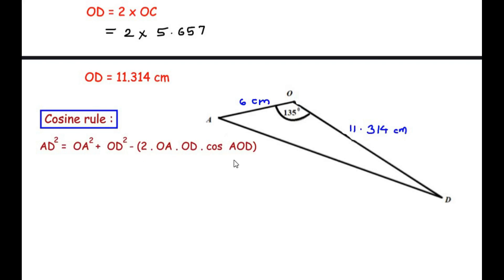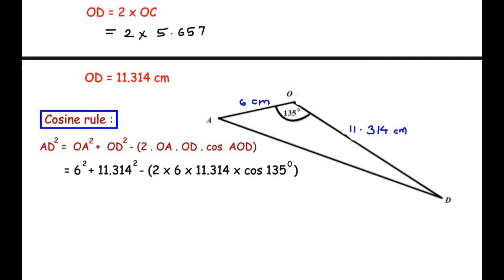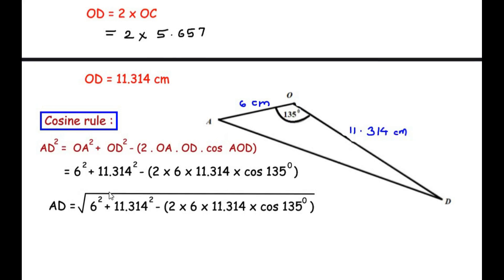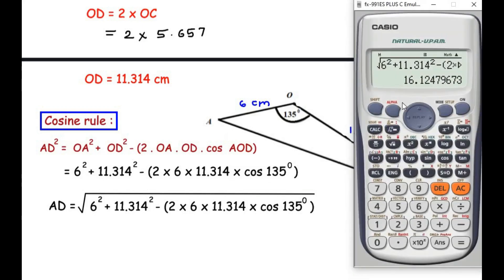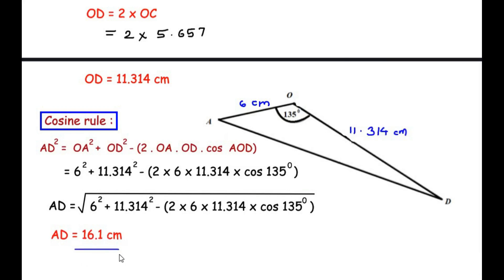Substituting the values: 6 squared plus 11.314 squared minus 2 times 6 times 11.314 times cosine of 135 degrees equals AD squared. Taking the square root gives 16.1247, which rounds to 16.1 centimeters. So this is the length of AD. Now let us move on to the fourth sub-question.